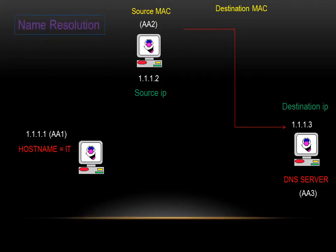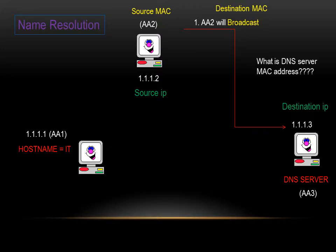First, we have to know the DNS server's MAC address. So AA2 will broadcast asking: what is the DNS server's MAC address?